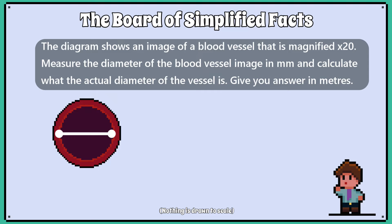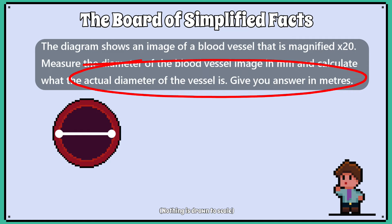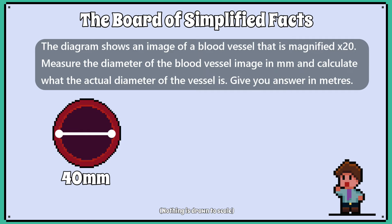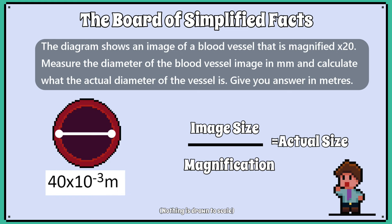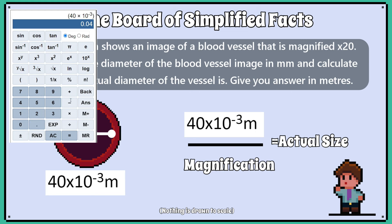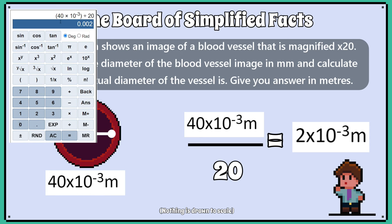A final example. We have an image of a blood vessel which we need to measure the diameter of. We are told this image has been magnified by 20 times, and the question asks us to find the actual diameter of the blood vessel in metres. Measuring the image, we get 40 millimetres, which converts to 40 times 10 to the negative 3 metres. Using the equation triangle, I cover the actual size A, leaving image size divided by magnification: 40 times 10 to the negative 3 divided by 20, which equals 2 times 10 to the negative 3 metres. This can also be written as 0.002 metres.